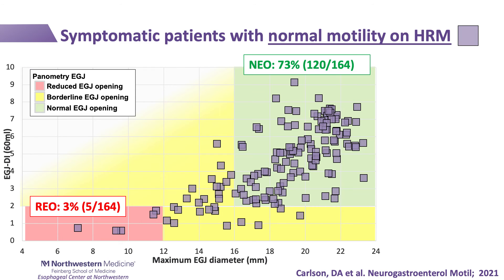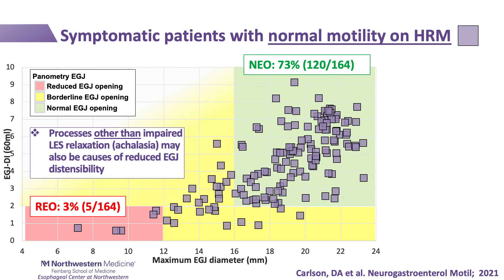However, all but five of these patients had borderline EGJ opening. Herein lies an important application: although EGJ opening is consistently reduced in achalasia, the patients in this study do not have achalasia based on their HRM findings. Thus, there are other factors beyond impaired LES relaxation that can cause reduced EGJ opening — an abnormal response to distension involving contraction of the LES is likely a common factor, keeping in mind the difference between the response to swallows on manometry versus the response to distension on FLIP planometry.